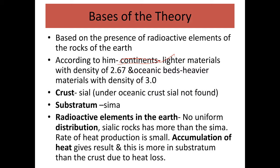The rate of heat production is small, but the crust has sialic elements that constantly lose heat through conduction and radiation. At the sima level, the rate of heat production is less, but there is accumulation of heat. Because of this heat accumulation, the accumulated heat causes the melting of rocks in the substratum.